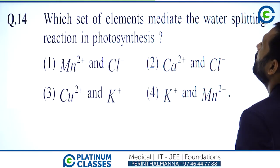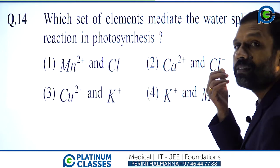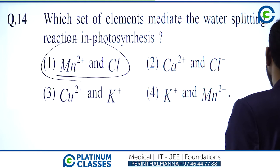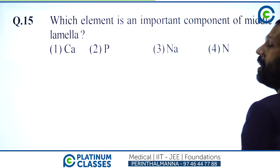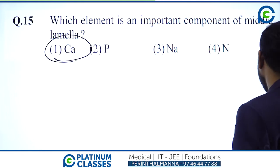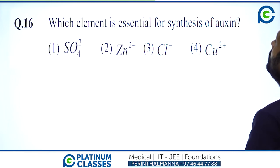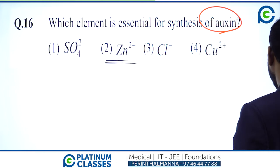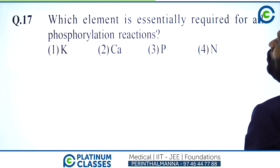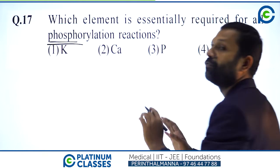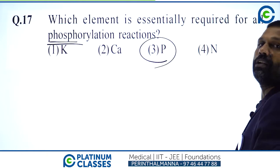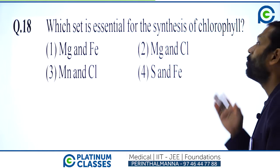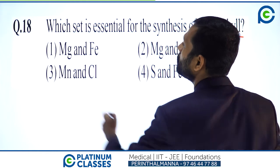Question 14: Which set of elements mediates the water-splitting reaction in photosynthesis? Manganese and chlorine — MNCL. Question 15: Which element is an important component of the middle lamella? Calcium. Which element is essential for phosphorylation reactions? Magnesium is essential for the synthesis of chlorophyll and is also involved in phosphorylation and absorption.